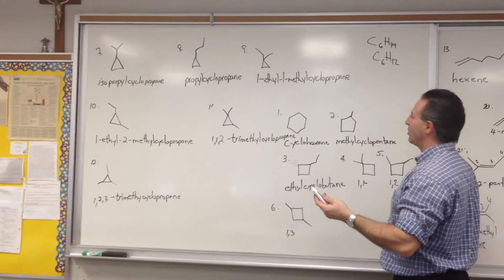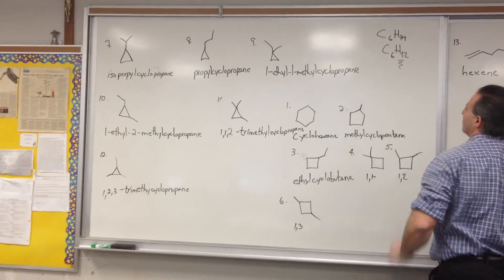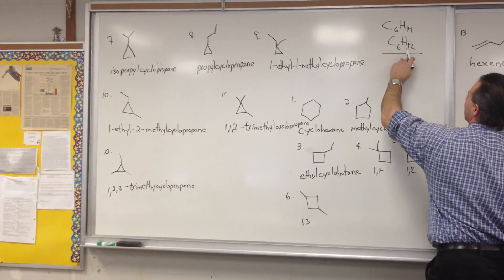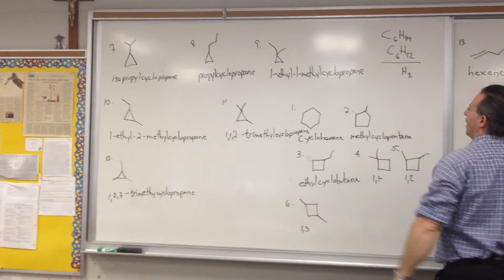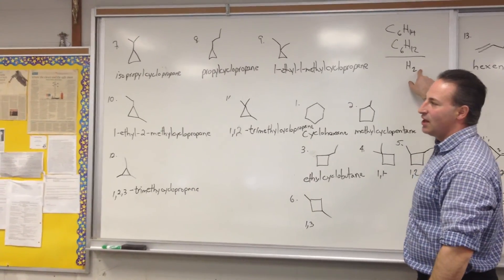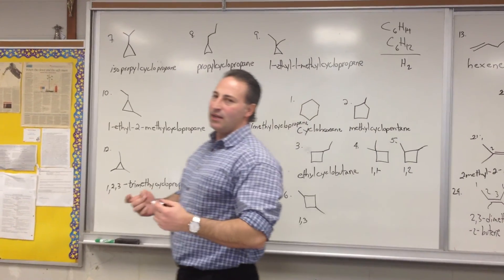If you have a molecule that does not have that formula, you can compare it to the parent alkane, you subtract the formulas and you find out how many hydrogen atoms are missing. If for every two atoms that are missing of hydrogen, it signifies the molecule either has a double bond or a ring.